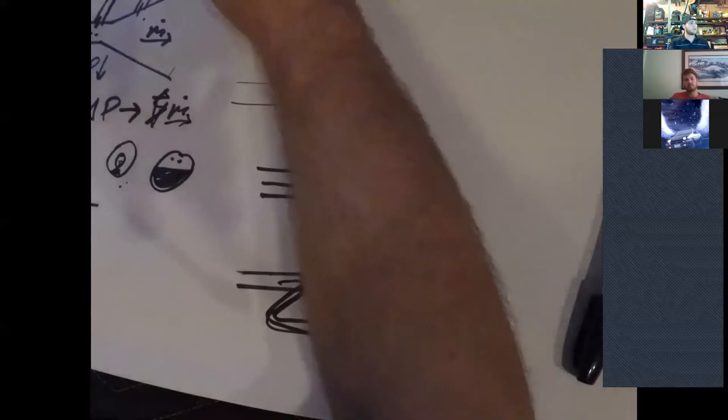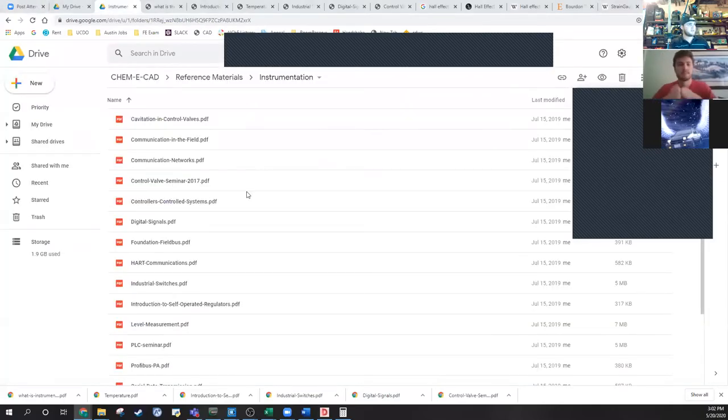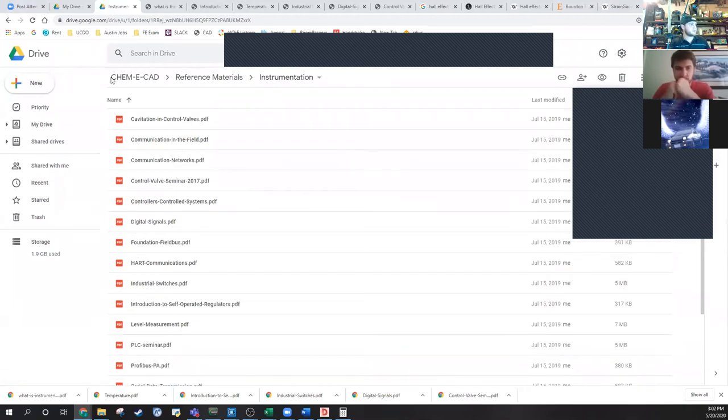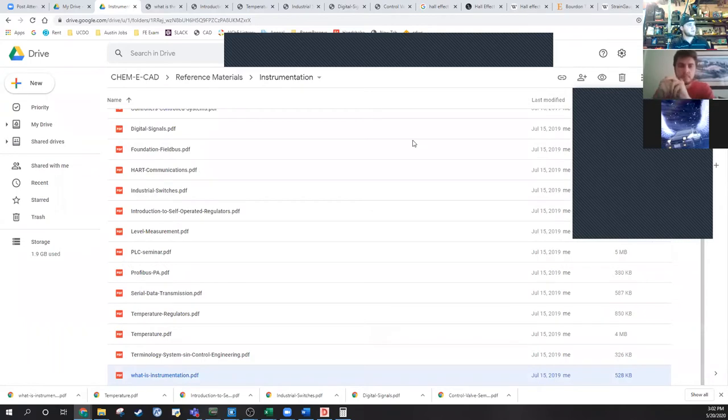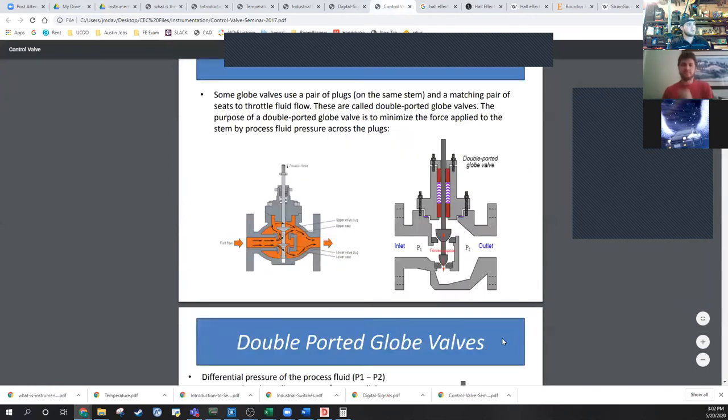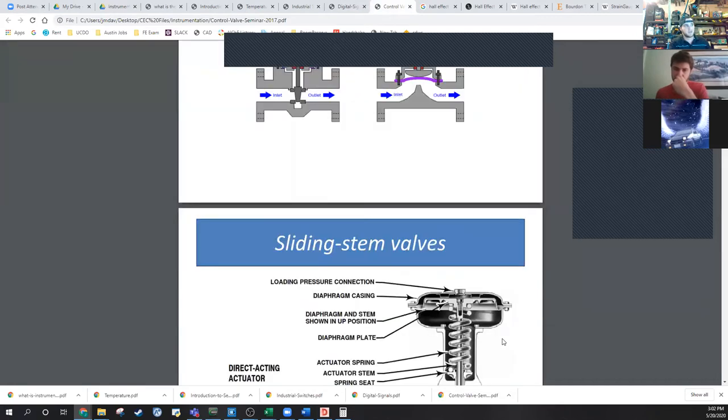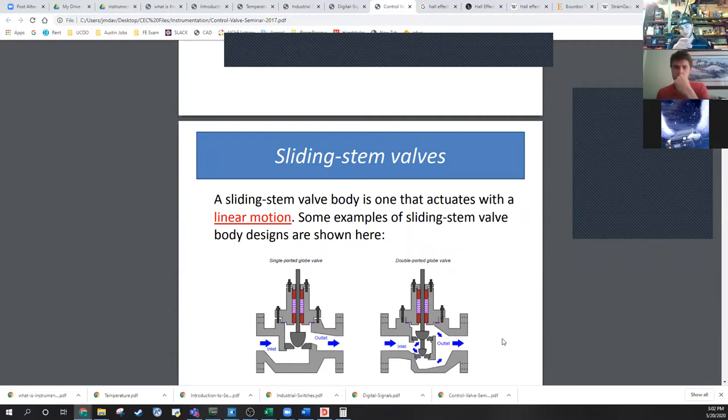The last kind is called a Coriolis flow meter. So you got your pipe and you got these two tubes that are piped in parallel and your process flow goes through it and it causes them to flex. And there's all kinds of super complex circuitry involved with that that I definitely can't explain in the time we have left, but it allows you to measure flow and it also allows you to measure density.